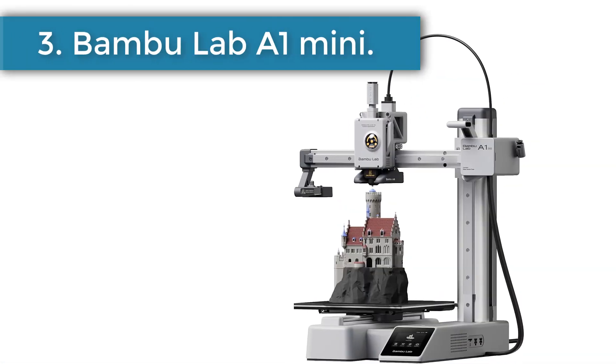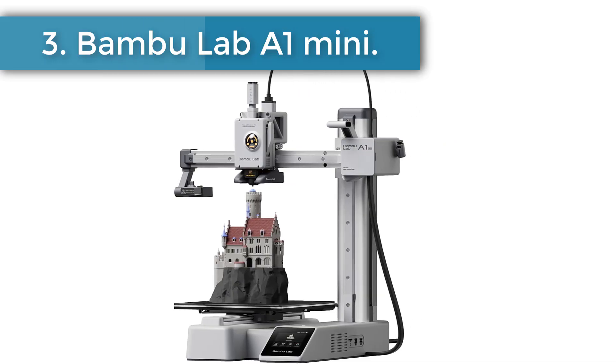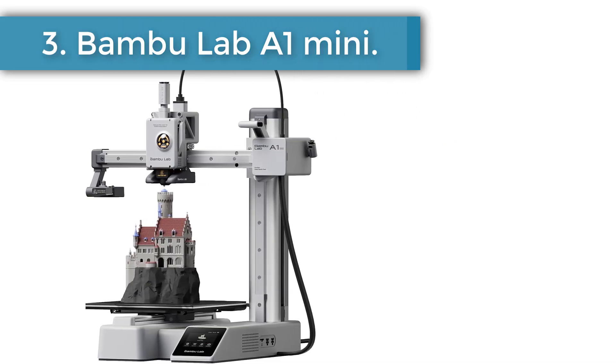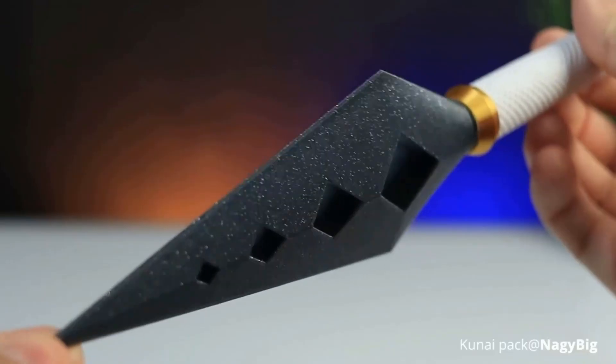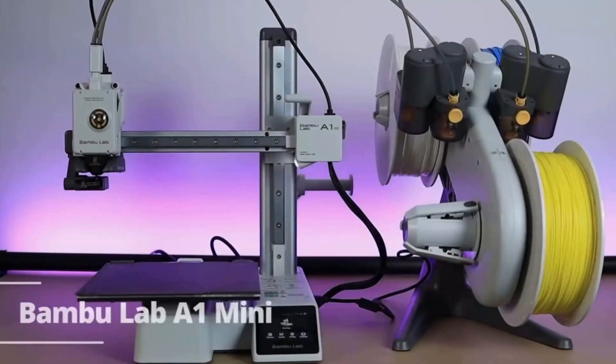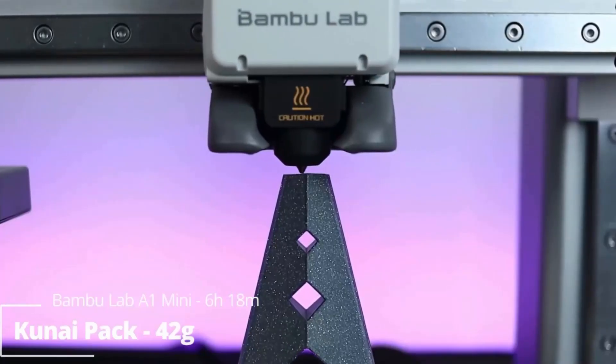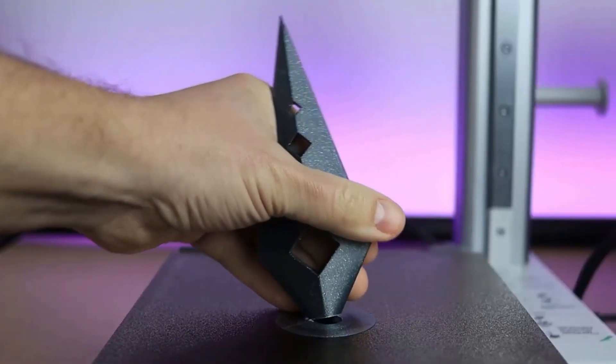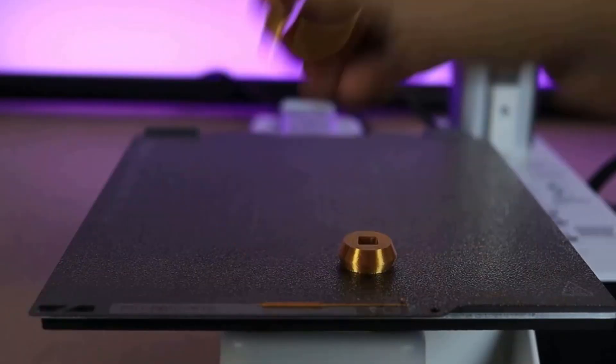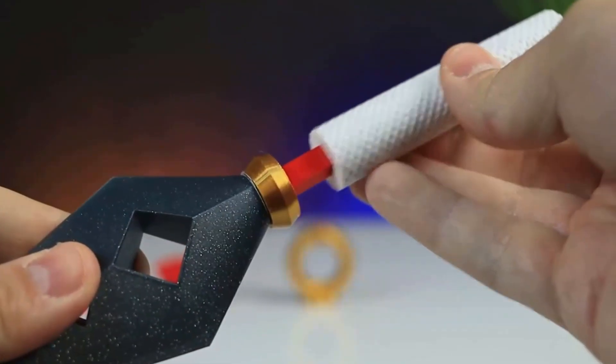Number 3. Bamboo Lab A1 Mini. The A1 Mini is a bedslinger printer, which means its extruder moves vertically up and down and horizontally from left to right while the print bed stays level but moves to the rear and front. By contrast, a Core XY-style printer has a print bed that moves vertically while its extruder moves forward, backward, left, and right.